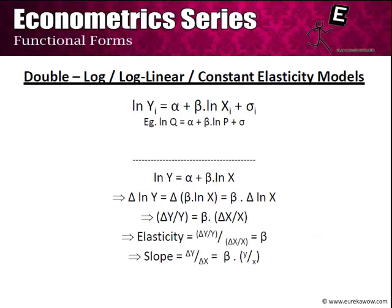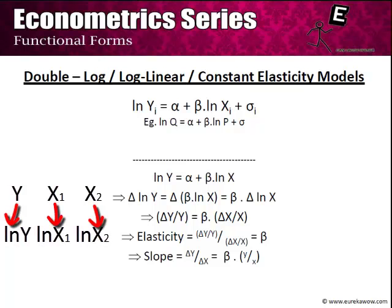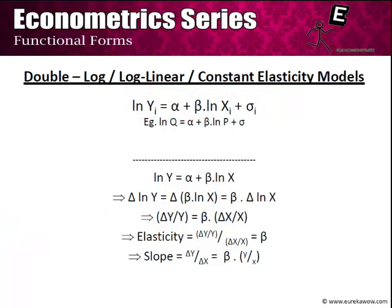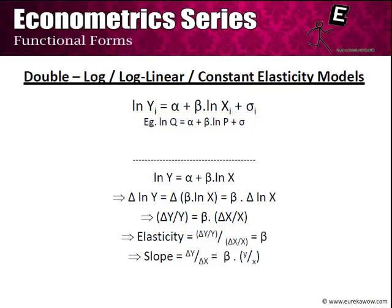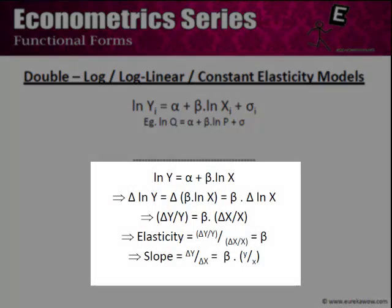One of the most interesting functional forms is the double log or log-linear model. Here we take the raw data, compute logs of both variables, and run a regression of the form: log(yi) = α + β·log(xi) + εi. A typical price-quantity relationship would follow this form: log(Q) = α + β·log(P) + ε. One of the most interesting properties is obtained by taking the total differentiation of both sides.